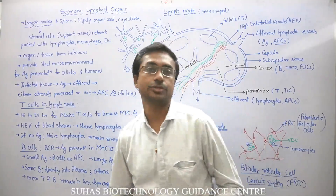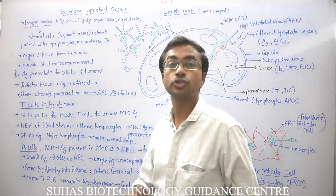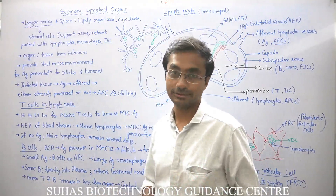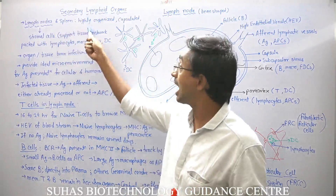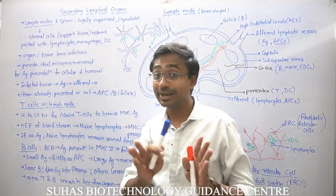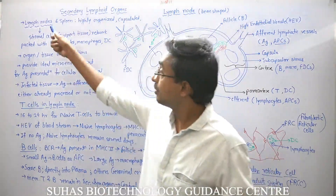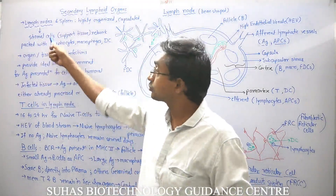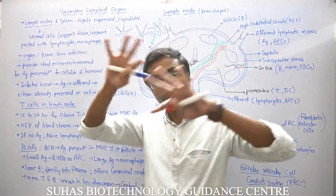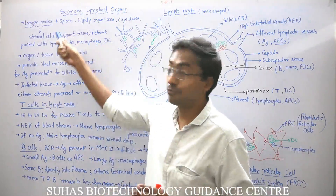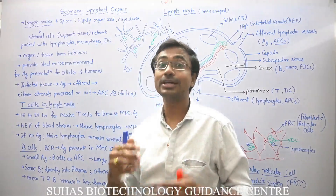Let's move our attention towards the most important, the most committed secondary lymphoid organ, and that is the lymph node. Lymph node and spleen are highly organized and capsulated, just like any other vital organs. Lymph node has stromal cells inside it — a network of supporting tissues which are present inside the lymph node — and these guide the lymphocytes for their secondary education.